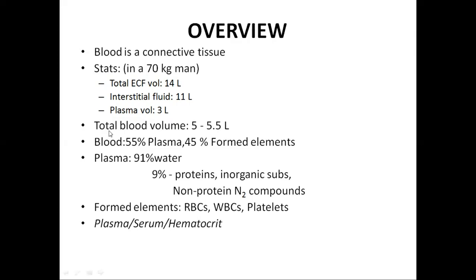Blood is composed of almost 55% plasma and 45% are the formed elements. Plasma is almost 91% water and 9% are the remaining proteins, hormones, enzymes, electrolytes, inorganic substances, and non-protein nitrogenous compounds. The formed elements present inside the blood are mainly the RBCs, also called erythrocytes; WBCs, called leukocytes; and the platelets, called thrombocytes.